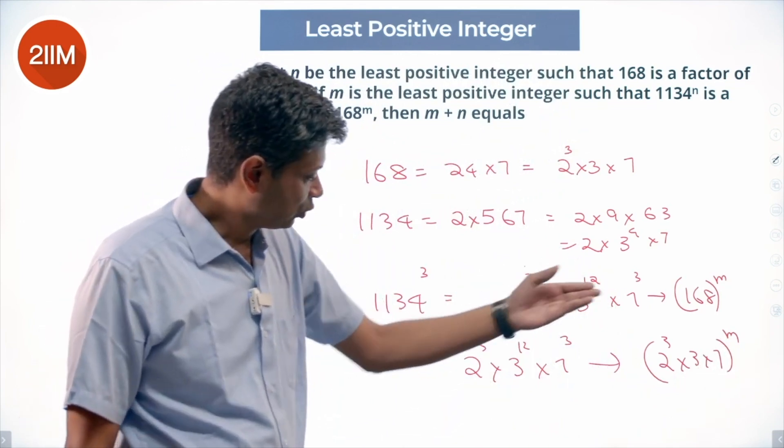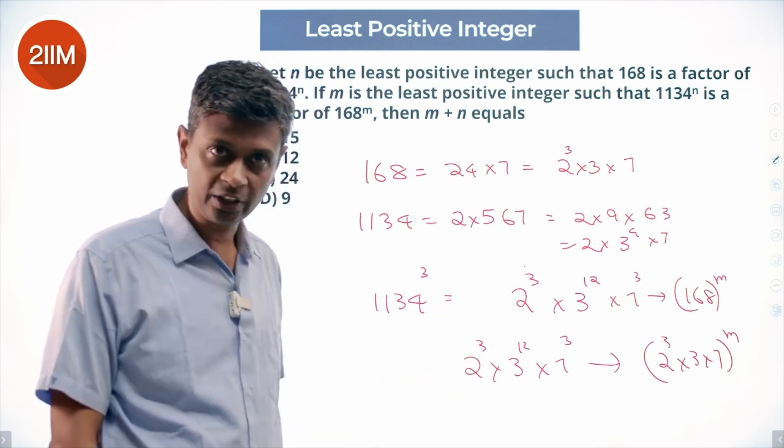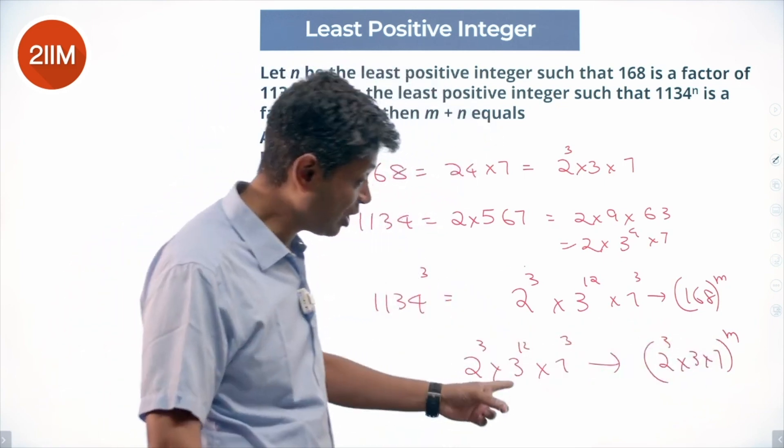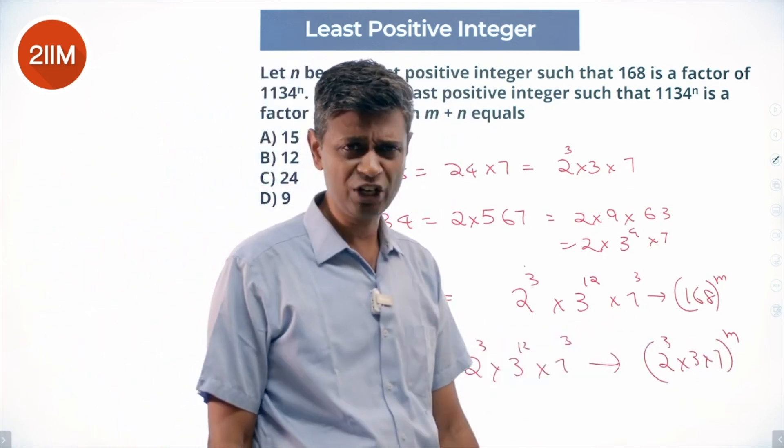So 2^3 × 3^12 × 7^3 should sit inside (2^3 × 3 × 7)^m. Put m equal to 1, 2^3 will be contained. Put m equal to 3, 7^3 will be contained, but we need 3^12, which is like a big number. m has to be at least 12.